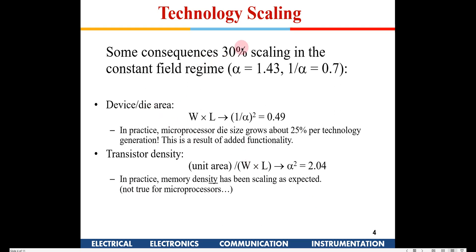Looking at the effects of scaling on various parameters: device area is given by W times L, so the final device area is only 0.49 times the original area because both dimensions are scaled by 0.7. For transistor density, since area scales as 1/alpha squared, you can fit almost twice the number of components into the same area when moving from one technology generation to the next.